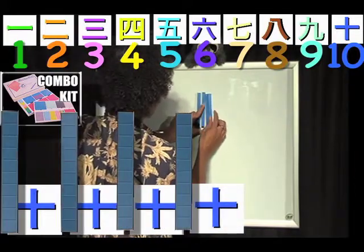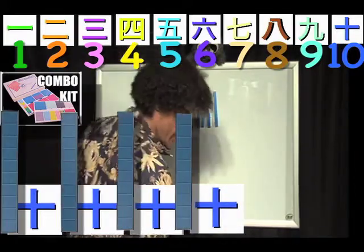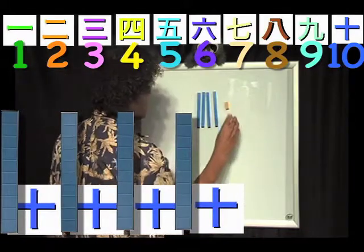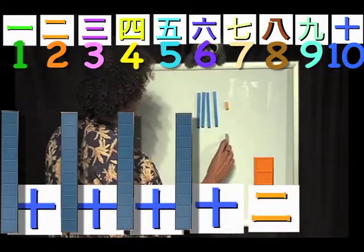Here we have 42. And I want to take away 6.